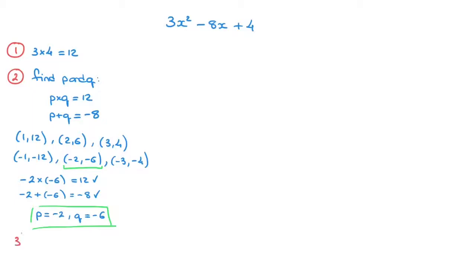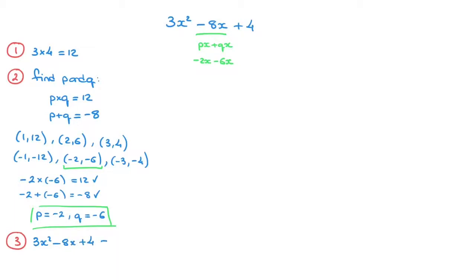We now move on to step 3, where we split the middle term. The middle term is negative 8x, and we write it as px plus qx, where p is negative 2 and q is negative 6, giving negative 2x minus 6x. So 3x squared minus 8x plus 4 equals 3x squared minus 2x minus 6x plus 4. That's step 3 done.